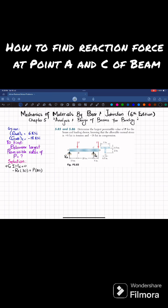So minus 30Ra plus 20P minus 6P is equal to 0. From here, minus 30Ra plus 14P is equal to 0. So 30Ra is equal to 14P, and Ra will be equal to 14 divided by 30 times P.